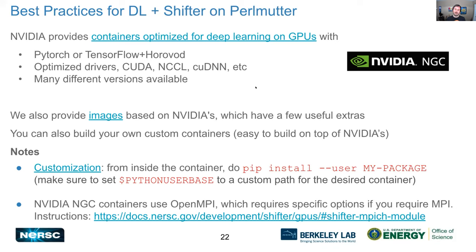One drawback with Shifter on Perlmutter is that you can't write to images. To add things, you either have to build a container on your laptop, or you can still use the `pip install --user` workaround. If you want to do that, make sure you set `PYTHON_USER_BASE` appropriately to some path where you want your custom packages to go, and then if you do `pip install --user`, you'll be able to write that — maybe to your home directory, depending on how you set it.